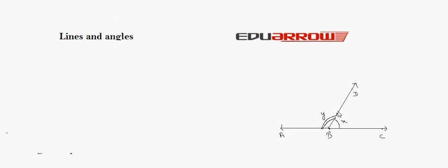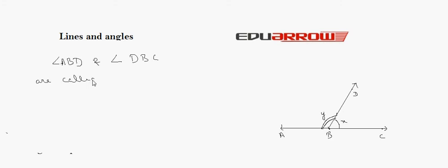If the non-common arms, say BA and BC, form a line, then angle ABD and angle DBC are called a linear pair of angles.